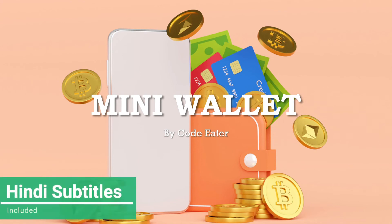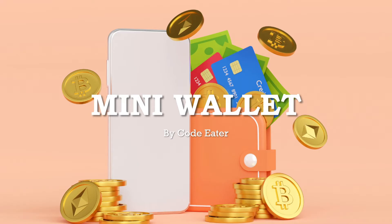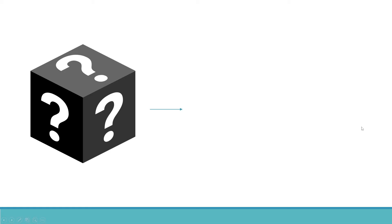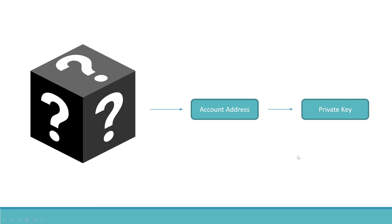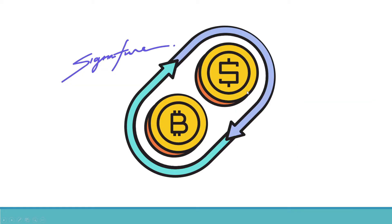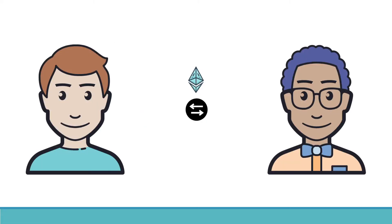Hi everyone, welcome back to Code Eater. In today's video we are going to see how we can create our mini decentralized wallet. In this mini decentralized wallet we are going to generate random account addresses just like MetaMask, generate private keys from these account addresses, create our own transactions, sign those transactions, and by the end of our project we are going to see how we can transfer Ether from a sender to a receiver.